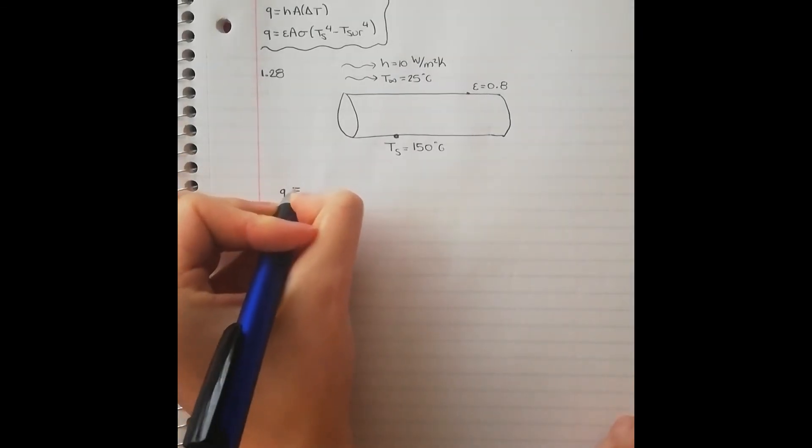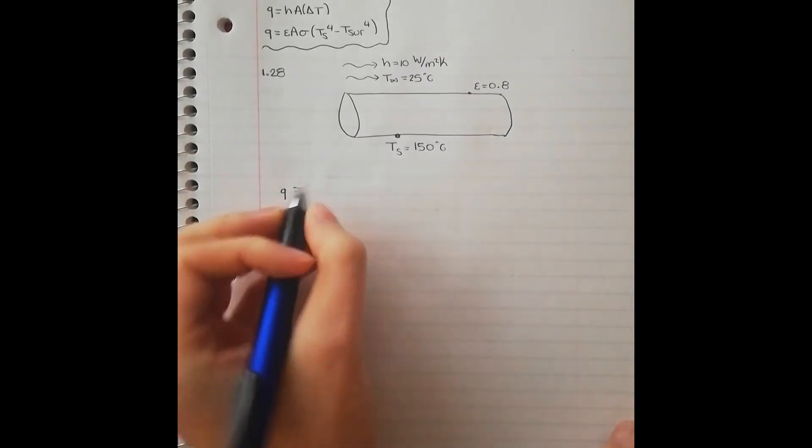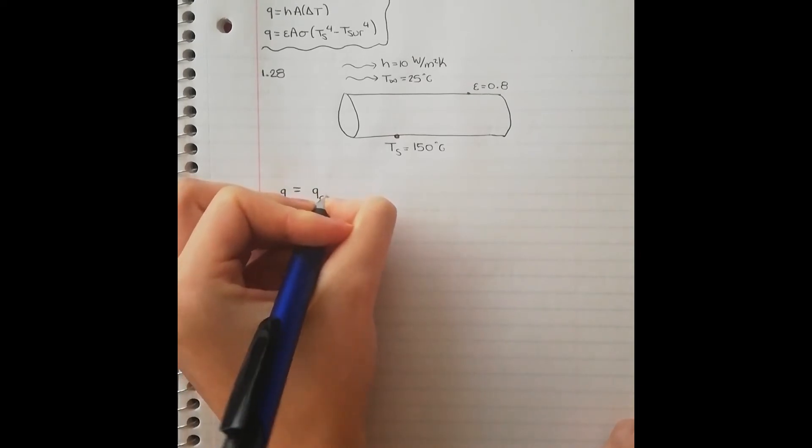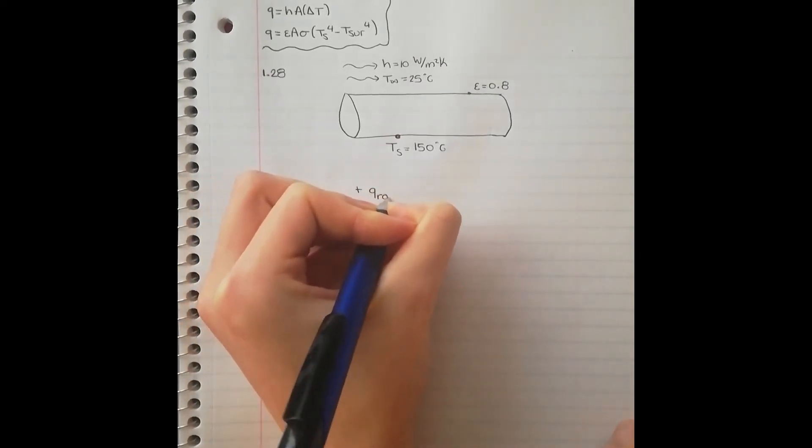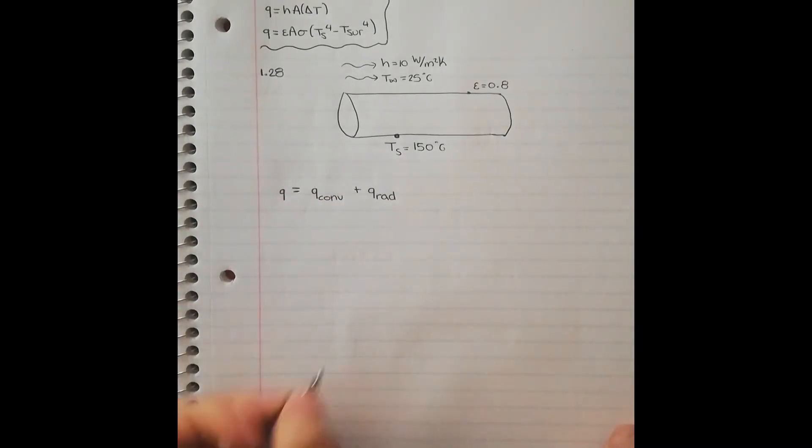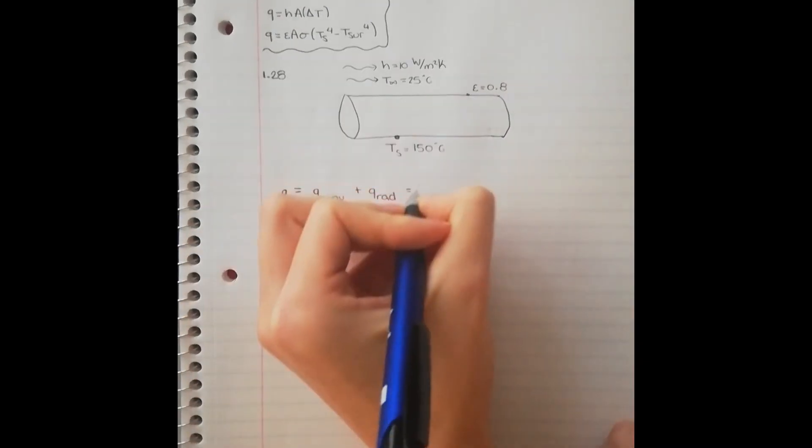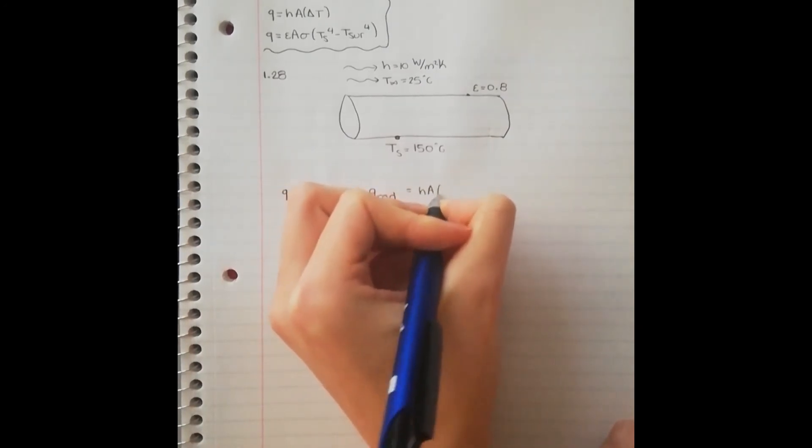That means that we can write our guiding equation. The total heat that has been transferred has been in the form of convection, as well as radiation. Thus, we have the usual equations.